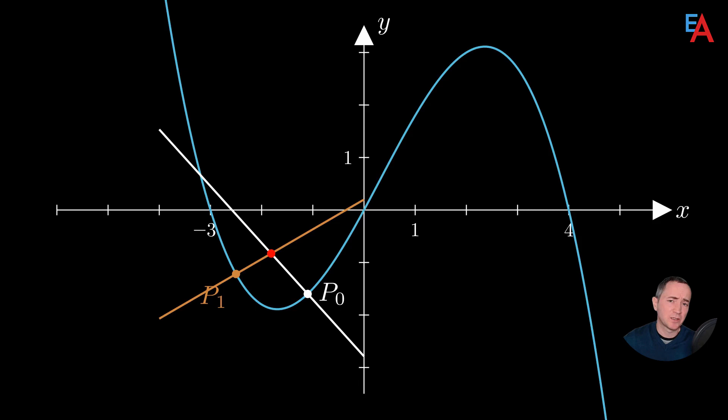We mean approaching in the sense of limit, i.e. point P1 is arbitrarily close to point P0, but never reaches it. We then have a very interesting situation. Even though these lines get closer to each other, they don't become parallel.